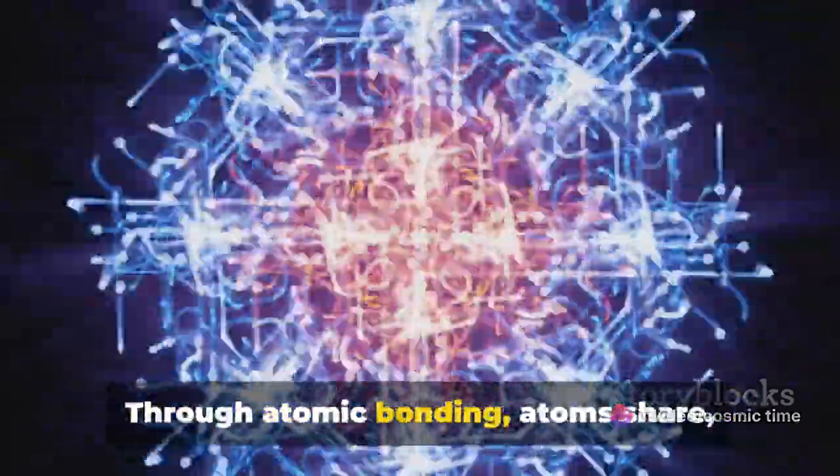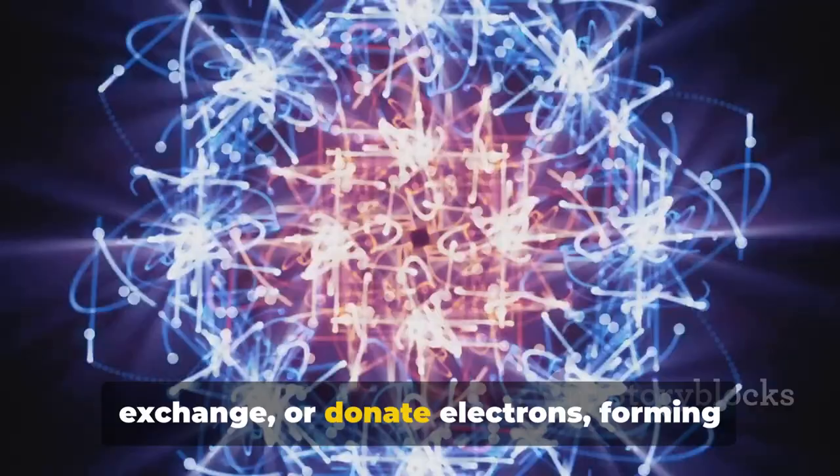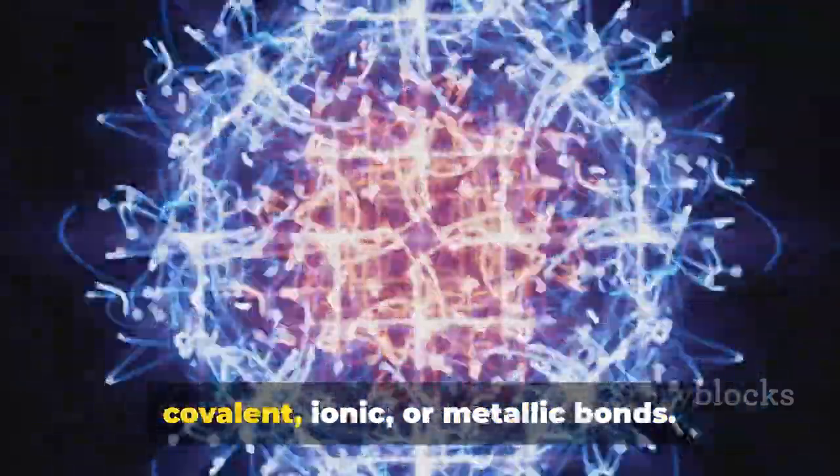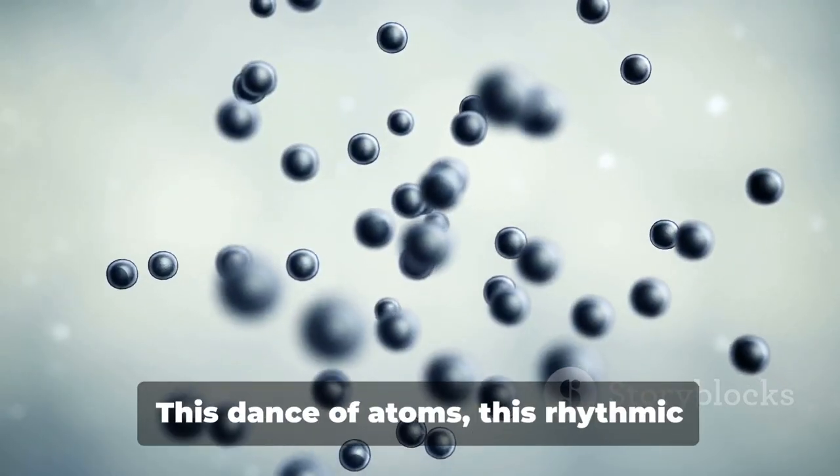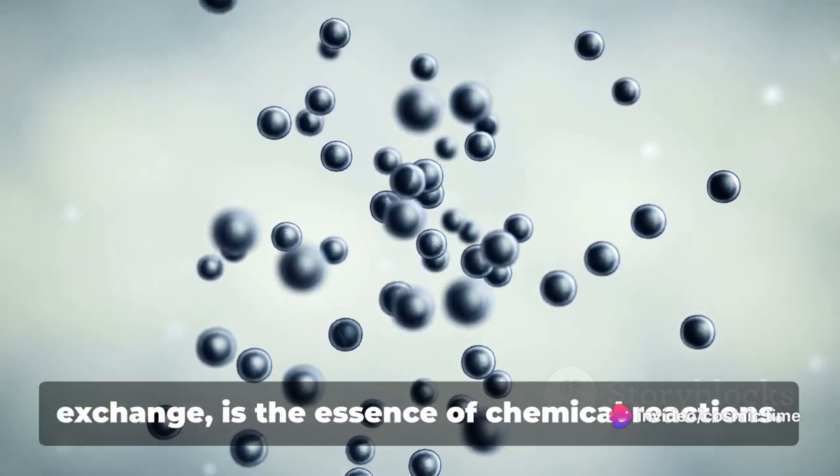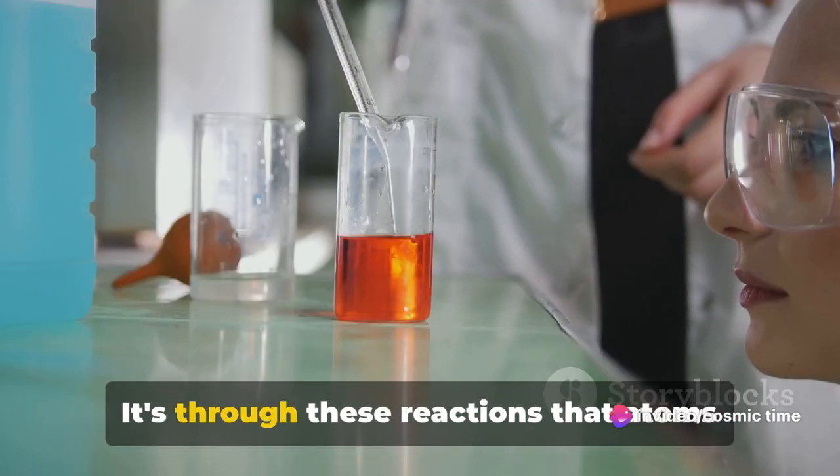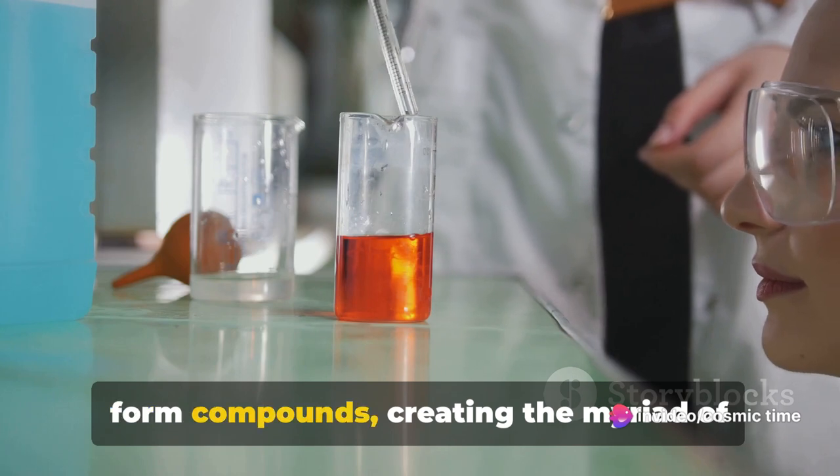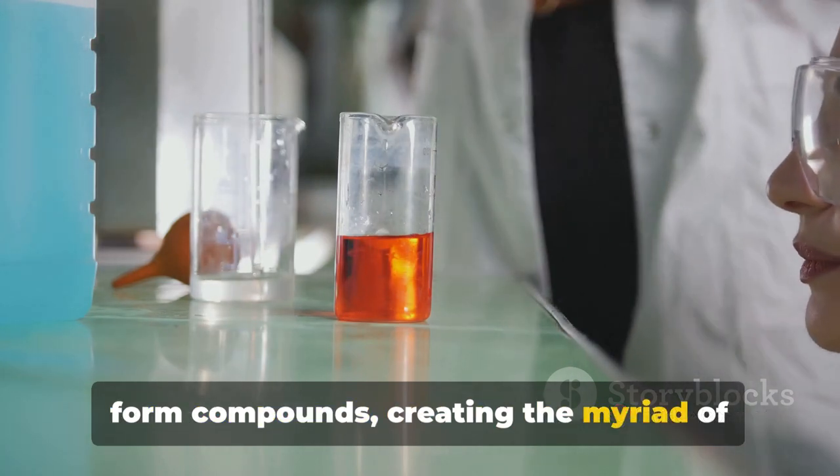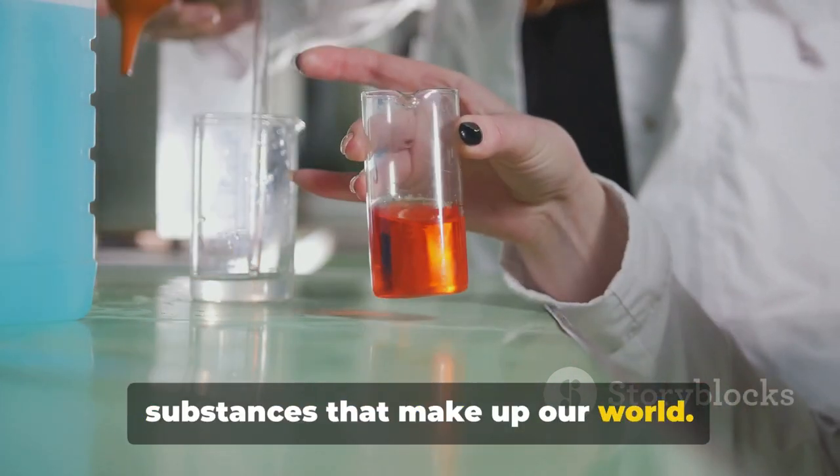Through atomic bonding, atoms share, exchange, or donate electrons, forming covalent, ionic, or metallic bonds. This dance of atoms, this rhythmic exchange, is the essence of chemical reactions. It's through these reactions that atoms form compounds, creating the myriad of substances that make up our world.